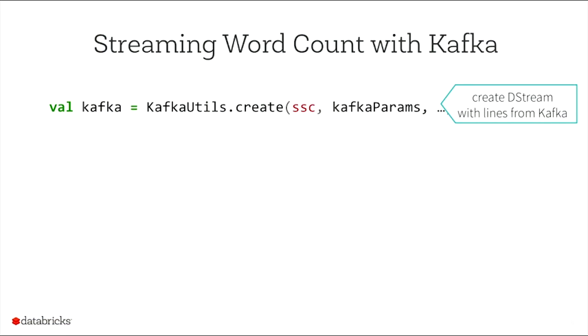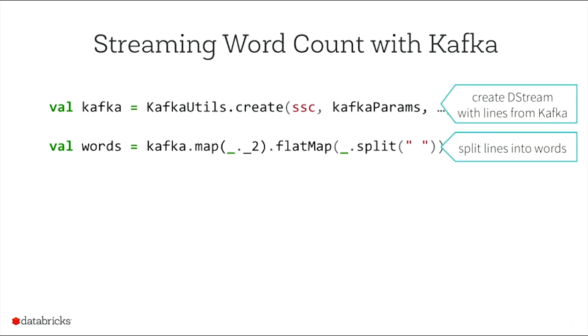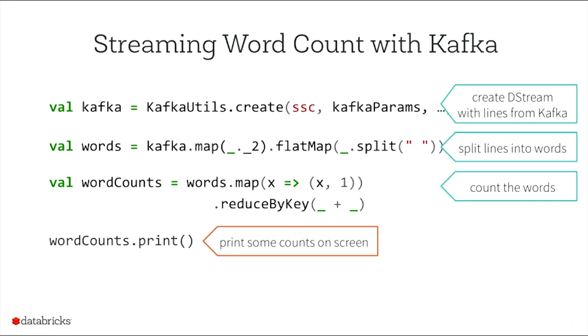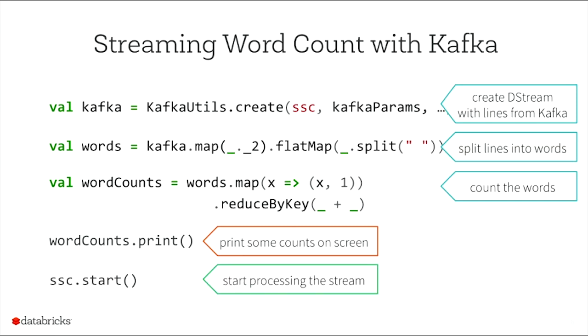To take a quick look at how the code looks: streaming word count with Kafka is actually just five lines of code. You create a Kafka stream by specifying Kafka parameters — what broker to connect to, what ZooKeeper to connect to. What this line creates is a DStream, which is to Spark Streaming what RDD is to Spark. You then apply functional transformations to split lines into words, do a word count by mapping to one and reducing by key, print some results, and finally say start processing the stream. That's all you need.